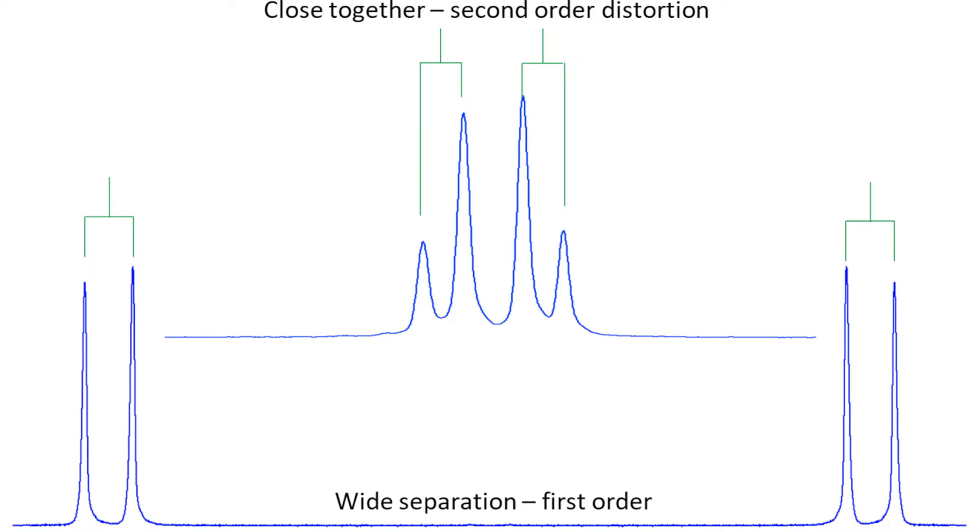The simple first order coupling patterns that I have shown are distorted by second order effects. When the chemical shift separation becomes small compared to the coupling constant, for example, two coupled proton signals show height distortions as the chemical shifts approach each other, eventually merging into a single peak.